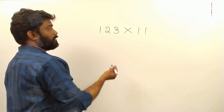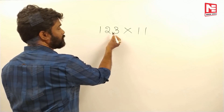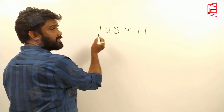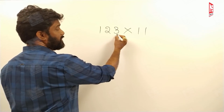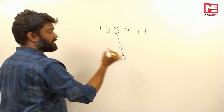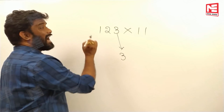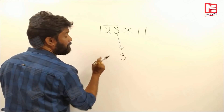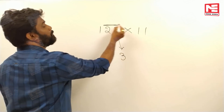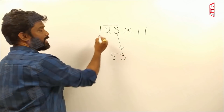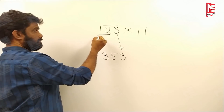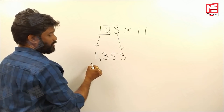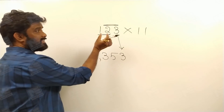This is very basic and simple. Take the number 123. Start the calculation from the units place — write the units digit as it is, so 3 comes as 3. Then add adjacent numbers: 2 plus 3 gives 5, and 1 plus 2 gives 3. Finally, 1 comes as it is. So your answer is 1353.